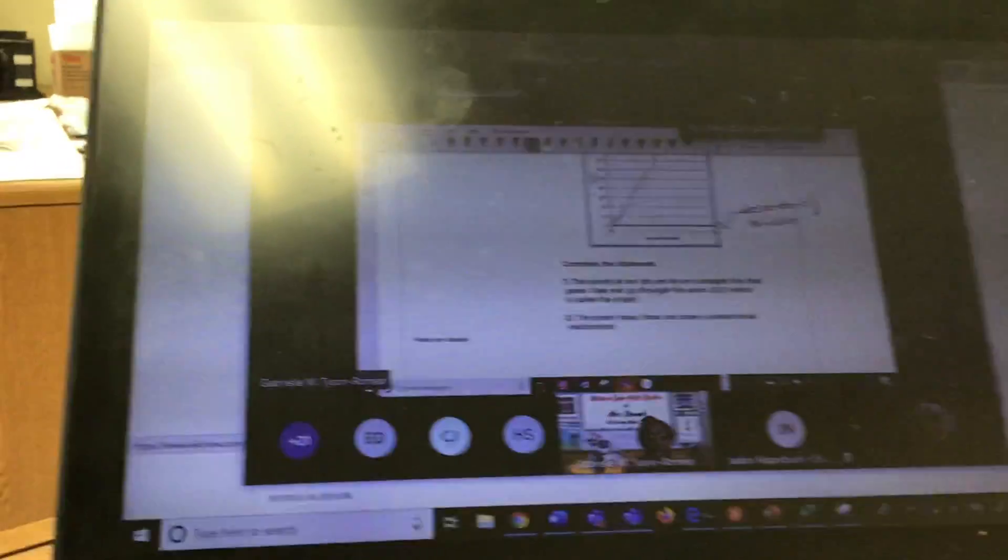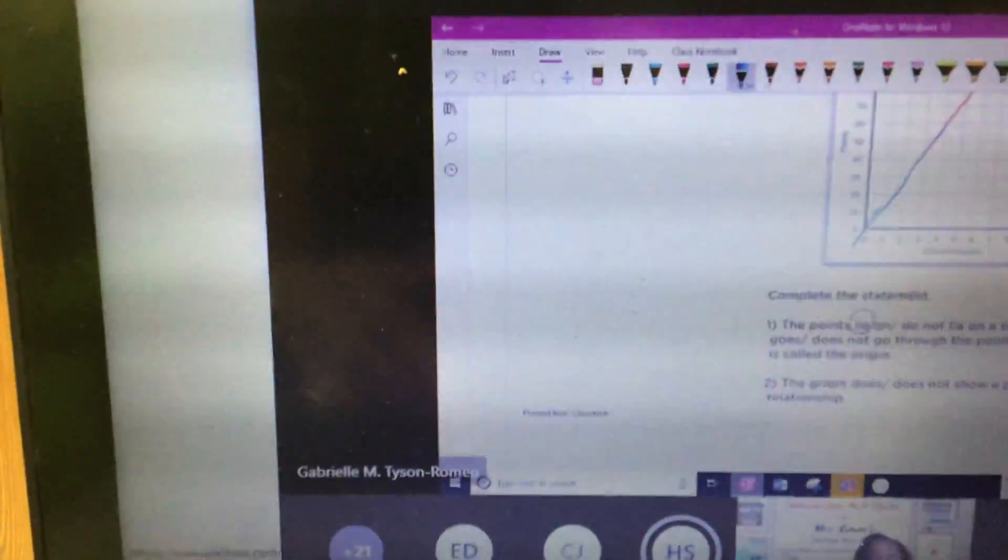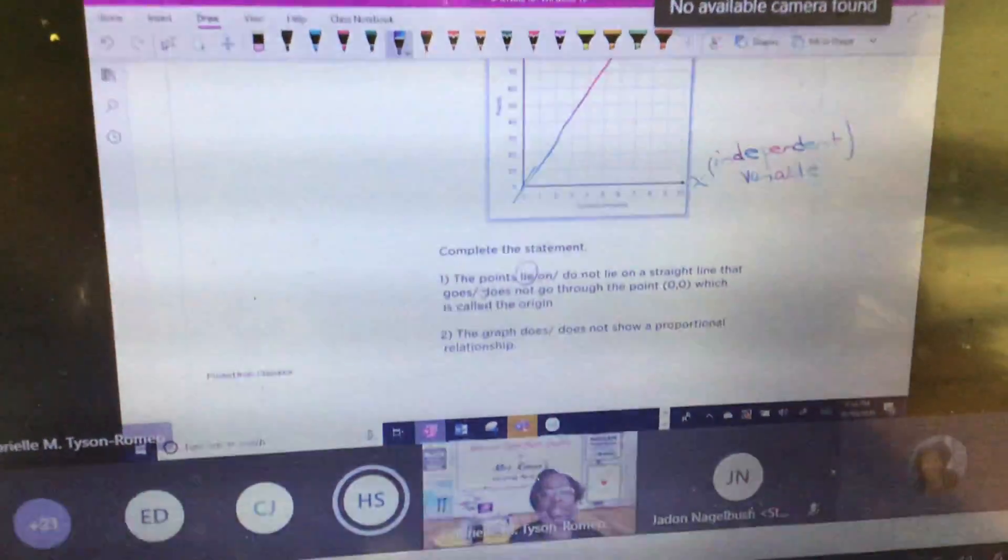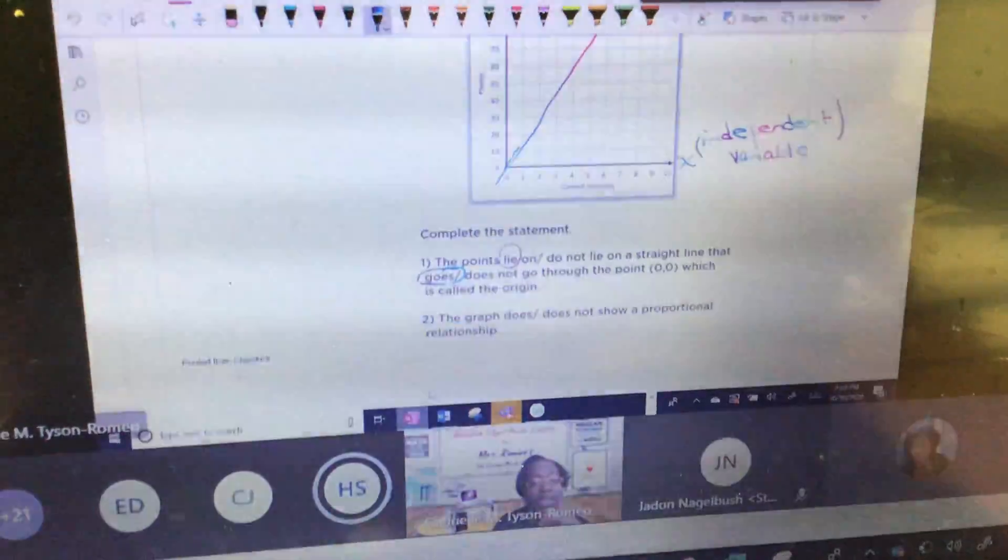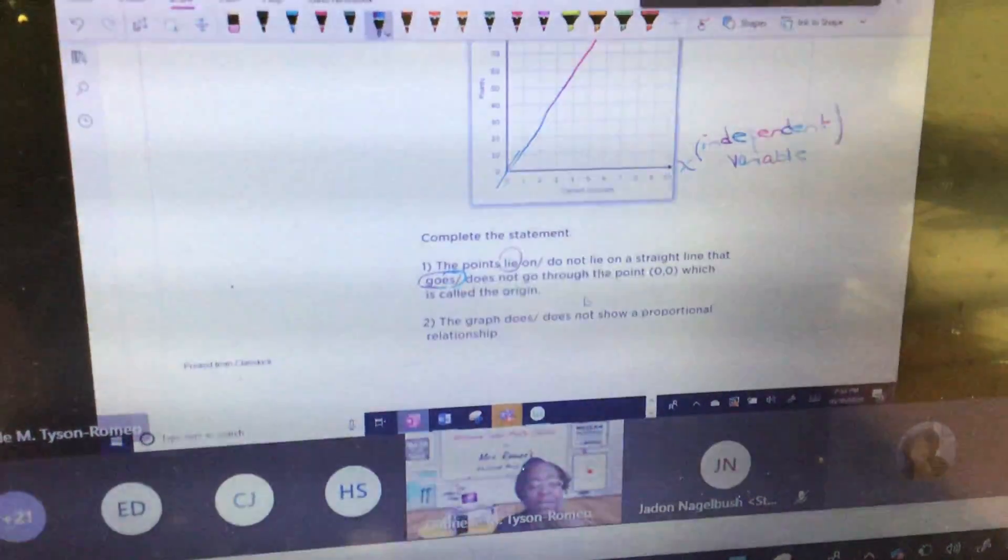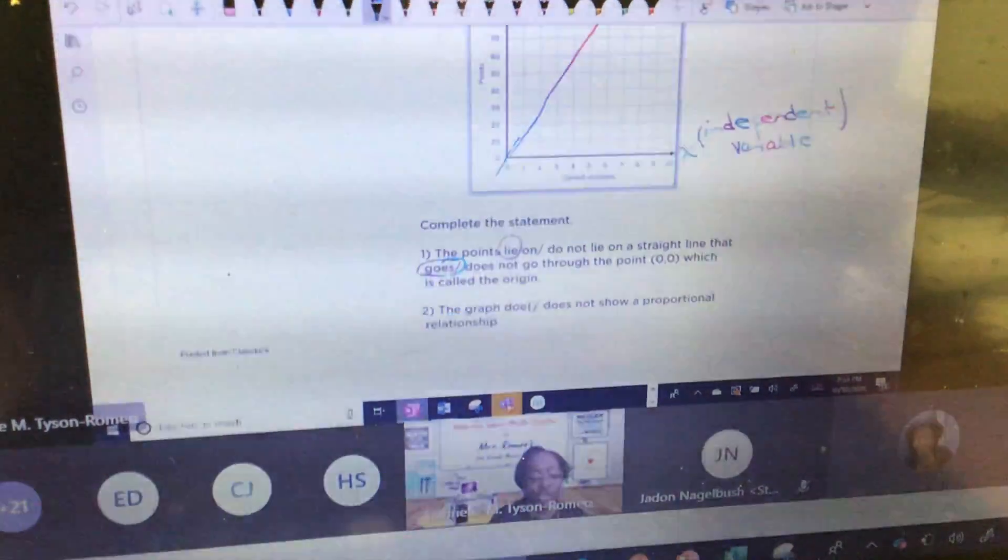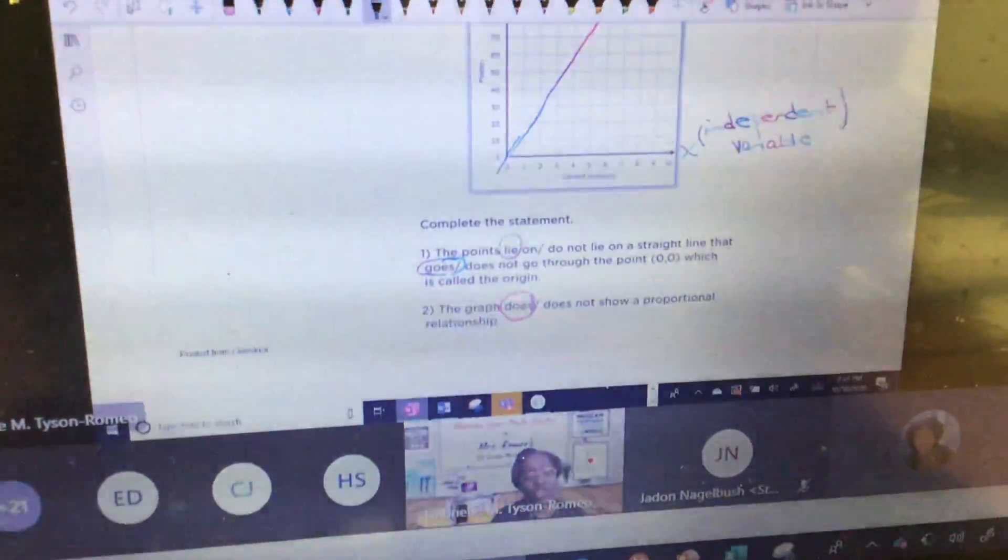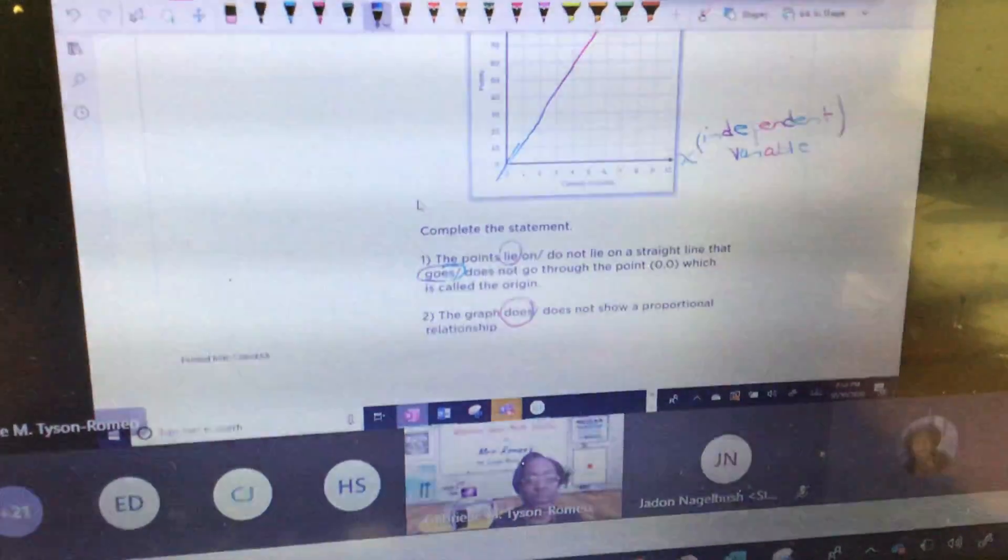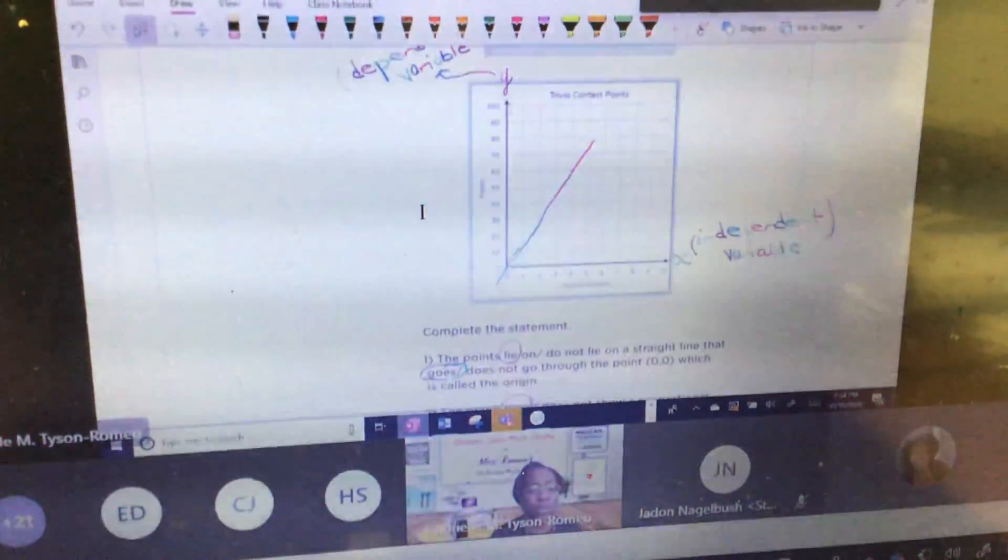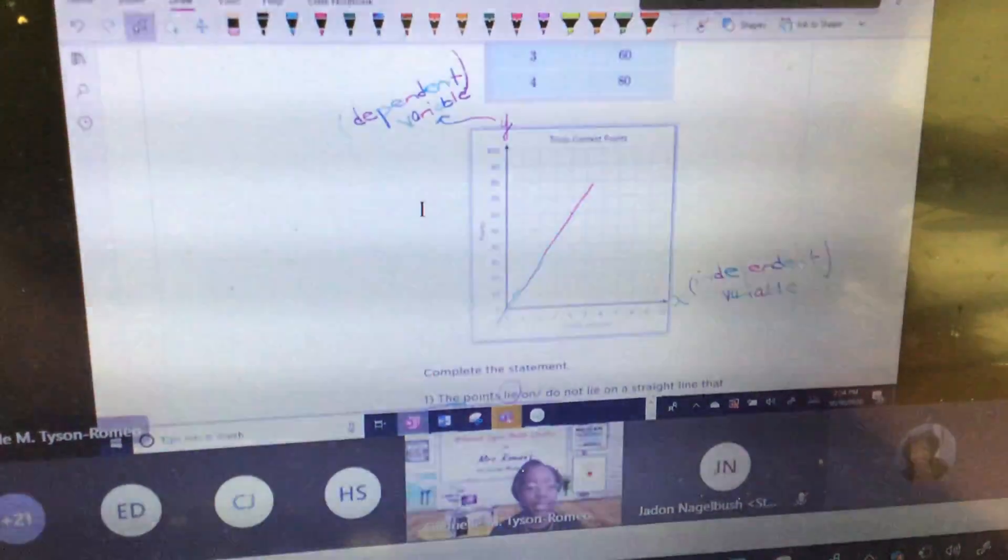Do the points lie or do not lie on a straight line? They lie on a straight line that goes through the origin. So because of that, because it's on a straight line and it goes through the origin, it does show a proportional relationship. Make sure you're circling those different words just so you have an idea. Is that clear for everyone?